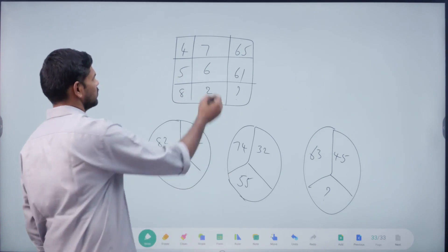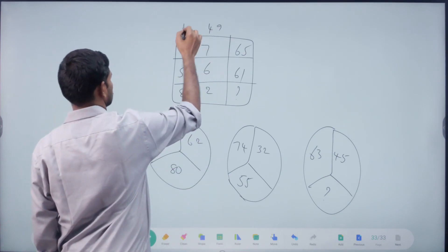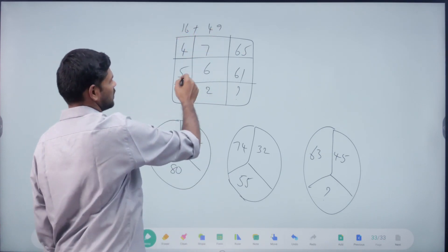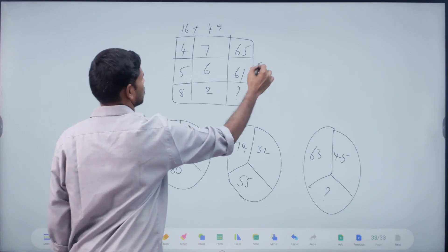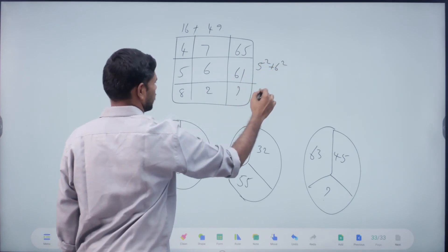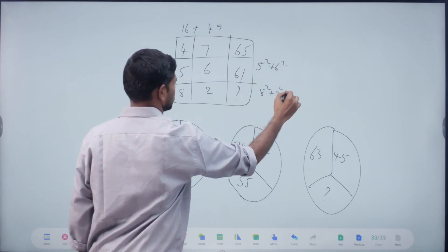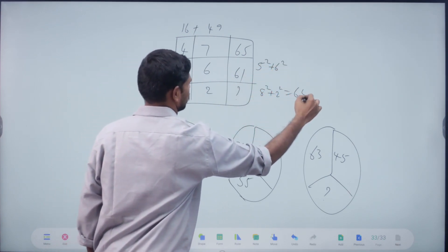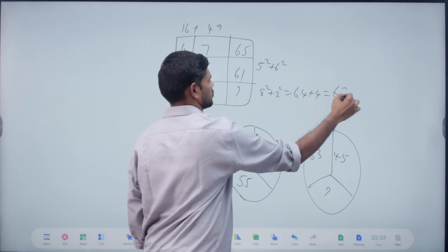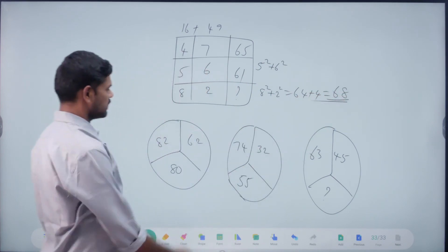Yes, okay. Right. 49 plus 16. Yes. 4 square plus 7 square. 5 square plus 6 square. Right. Here 8 square plus 2 square. Answer is 64 plus 4. Right, okay. Super.